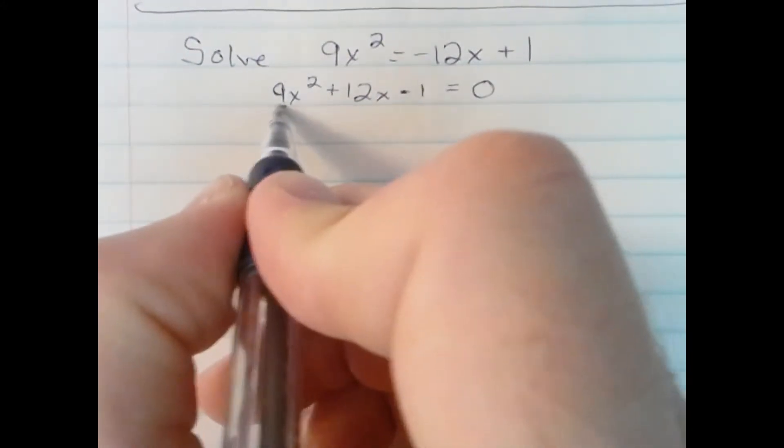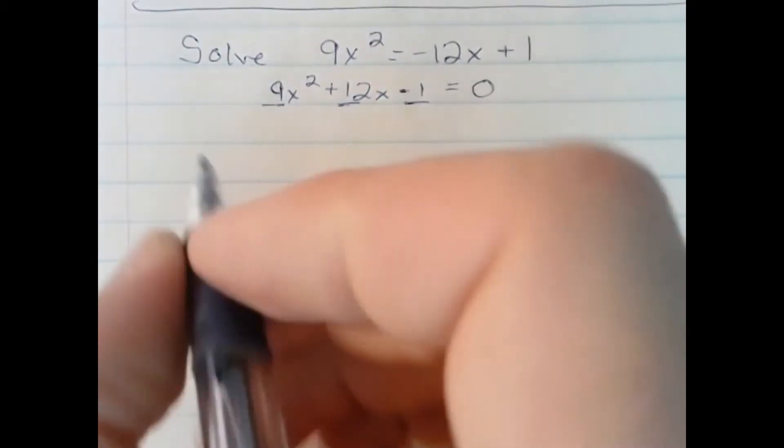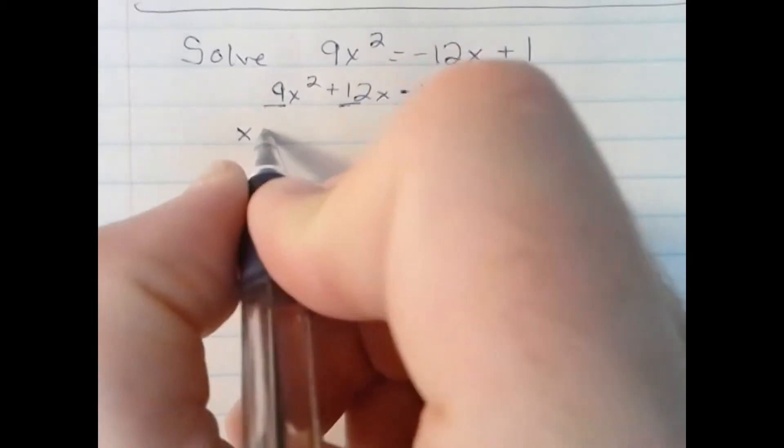My a is 9, my b is 12, and my c number is negative 1. Plugging into the quadratic formula,